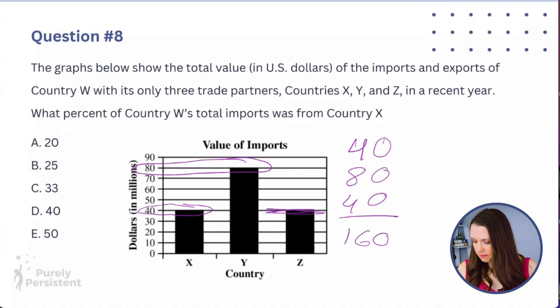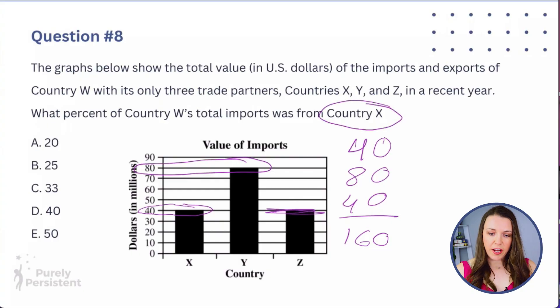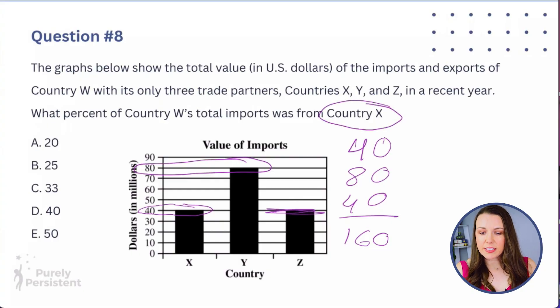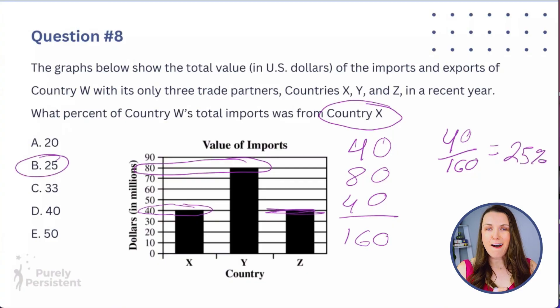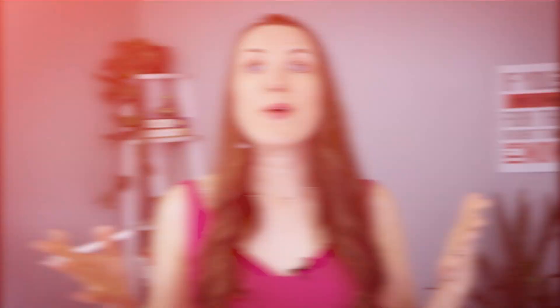And then I want to know country X's share. So I can say 40 over 160 — part over whole. 40 divided by 160 is going to be 25% of the imports come from country X.